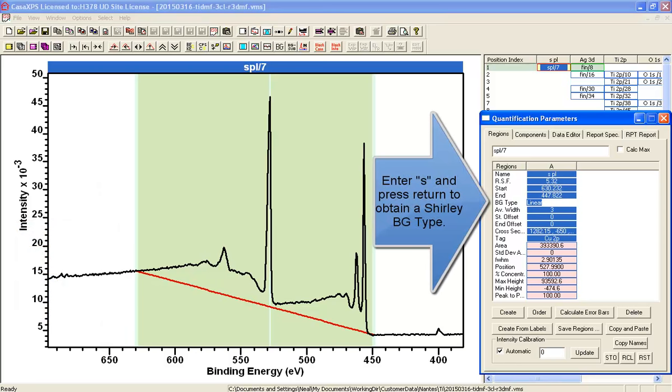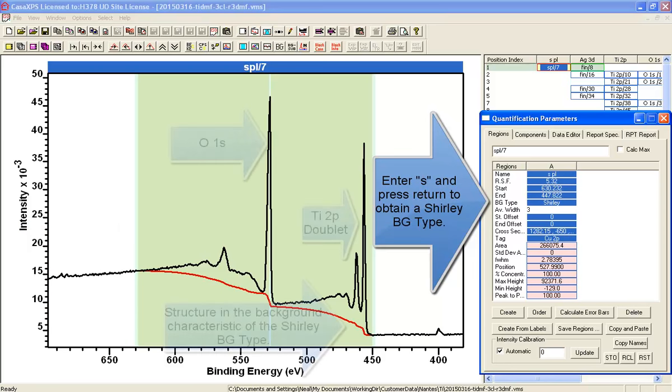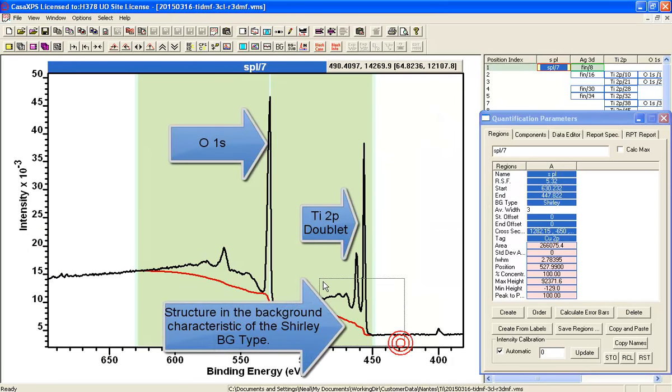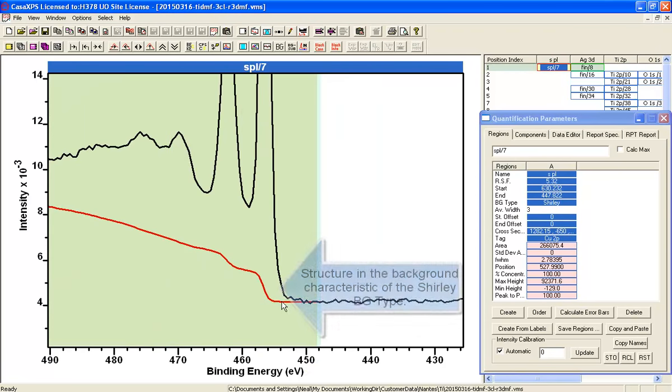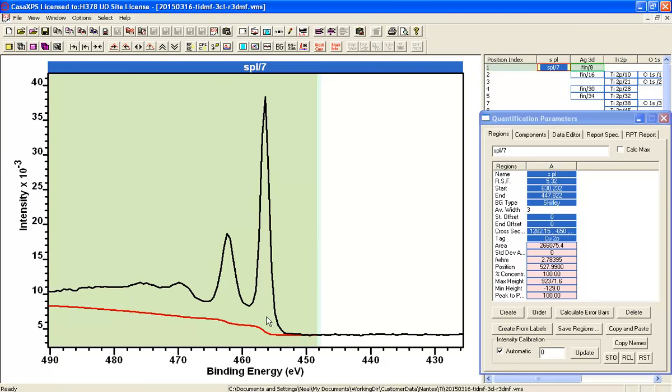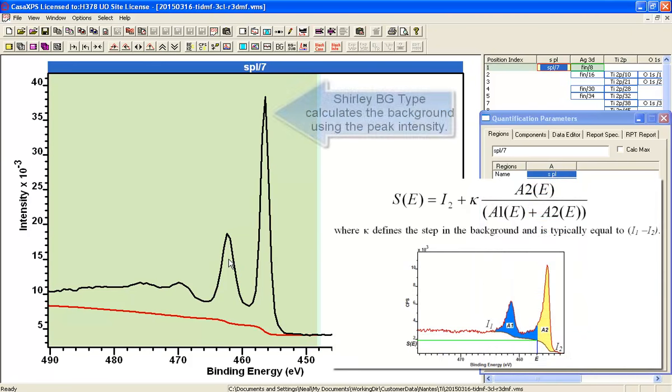However, if we introduce a Shirley background, we then start to see some structure appearing within the background. And these are the characteristic S shapes that you'd see in a Shirley background that sit beneath the peaks. As you see here, the titanium 2P doublet, both peaks have an S as does the oxygen 1S.